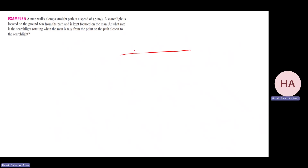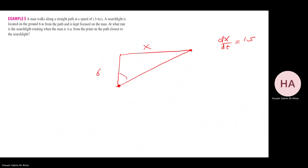A man walks along a straight path. We call his distance x, so dx/dt = 1.5. There's a searchlight 6 meters away. There is an angle of the searchlight rotating as the man moves, so I need to find the rate of rotation of the angle, dθ/dt, when x = 8.